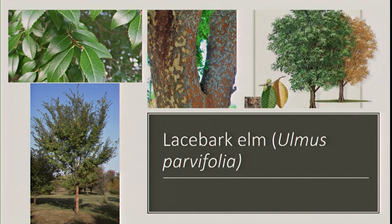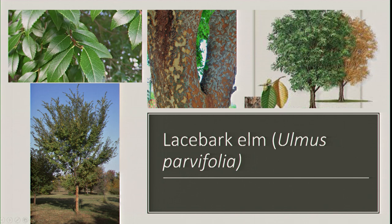The next species is lace bark elm, also called Chinese elm — Ulmus parvifolia. This is why I like using the scientific name, because common names differ. The dead giveaway is the jigsaw bark: little orange pieces fall off in a puzzle shape. These leaves are also smooth, like the winged elm. All elms are doubly serrated — there are large serrations with tiny, tiny points in between — they're doubly serrated.